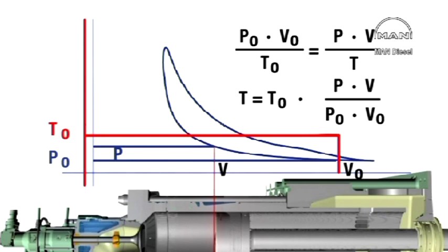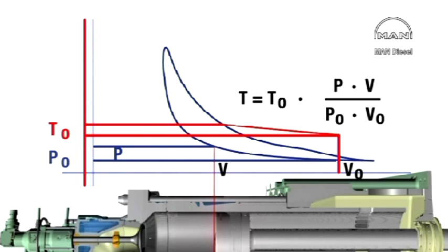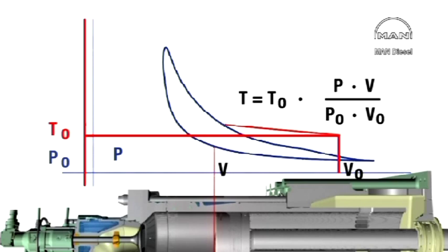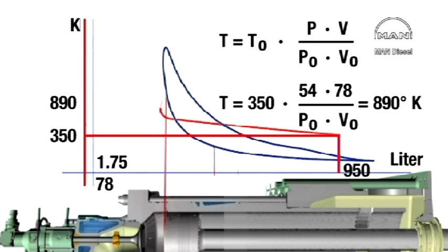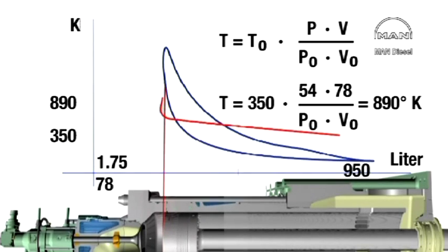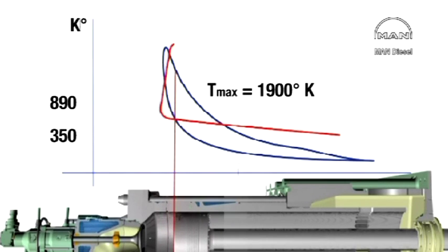The equation can be rearranged to express the temperature T direct for an arbitrary piston position. The indicator diagram gives us the values that are to be substituted in the equation when computing the temperature. For the top position of the piston, we find the temperature to be about 890 degrees Kelvin. The highest temperature occurs at the cessation of combustion, here found to be 1900 degrees Kelvin.